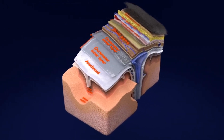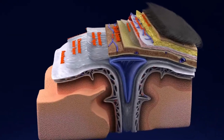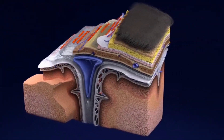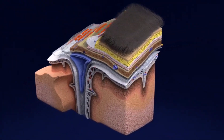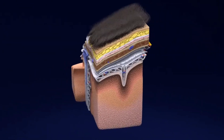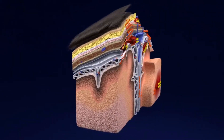The layers of the head are, from outside to inside: the scalp, the skull or cranium, the meninges, and the deeper brain parenchyma.